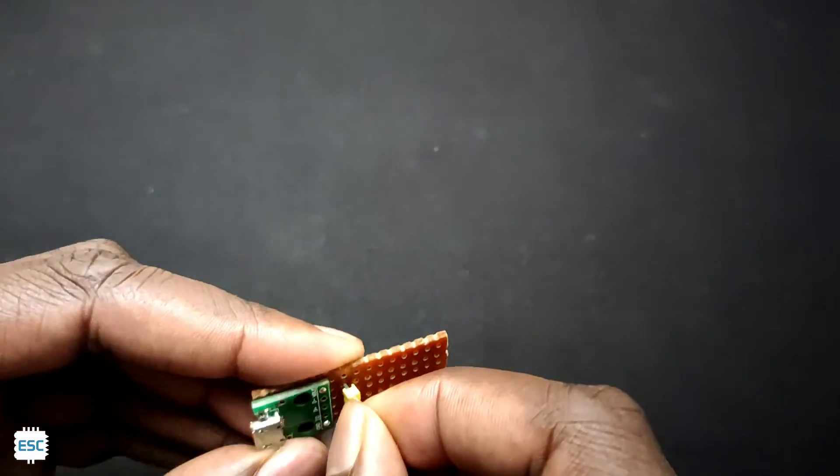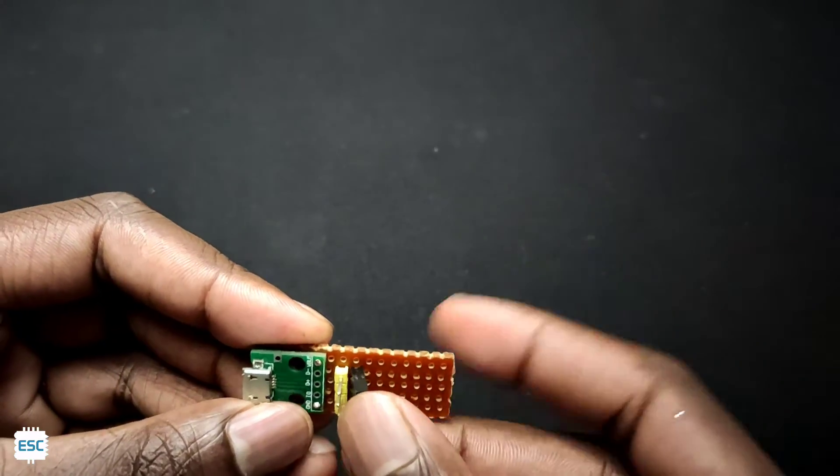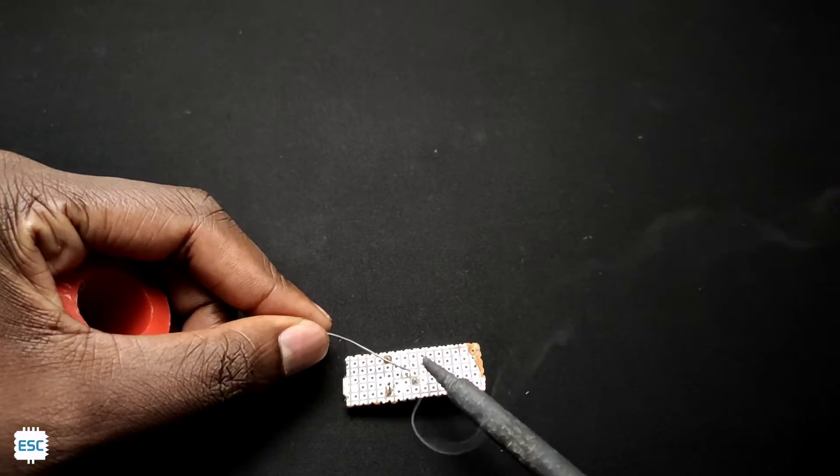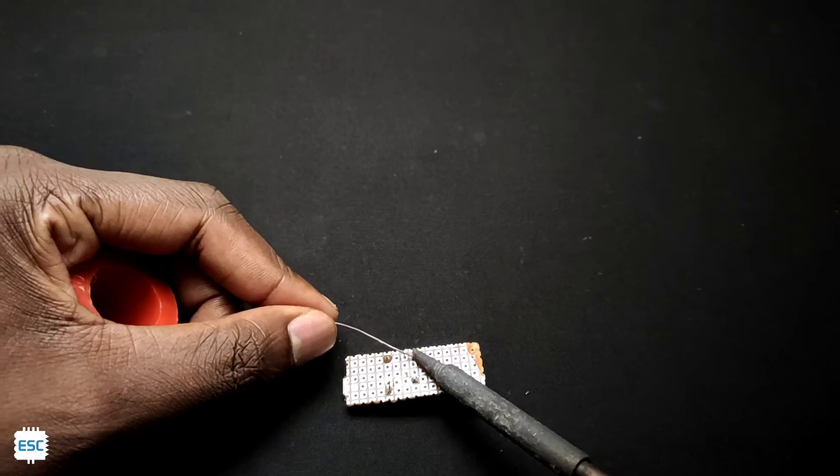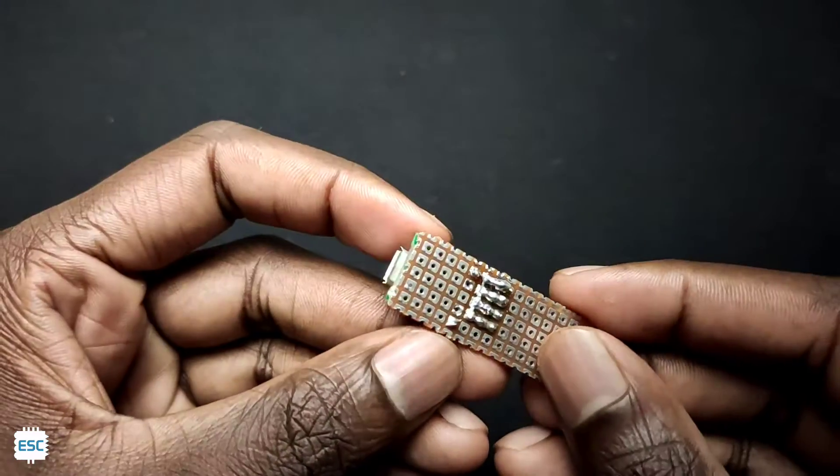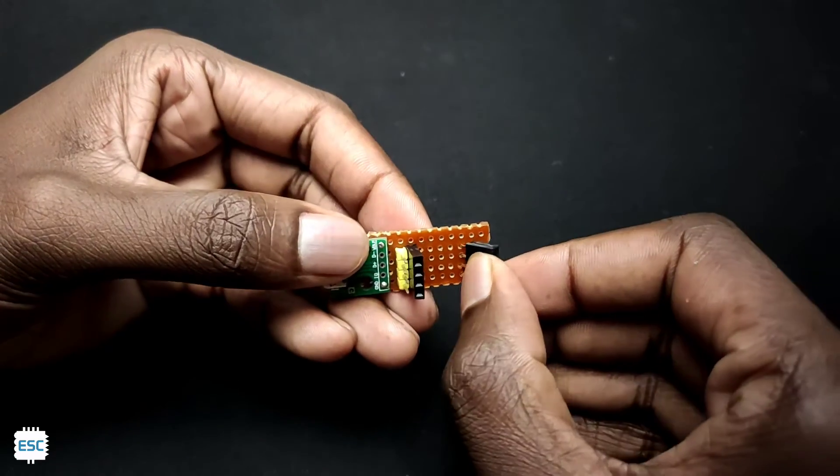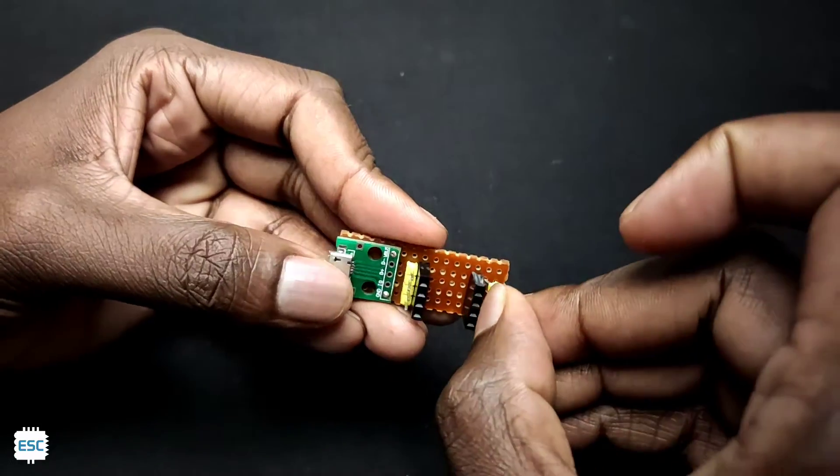Next, I placed 4-pin male and female header pins on the dot board and soldered it. The same step I repeated on the opposite side of the PCB.